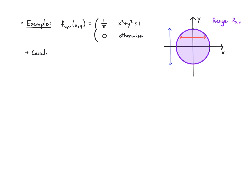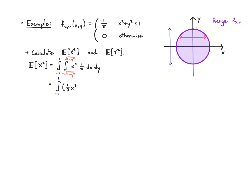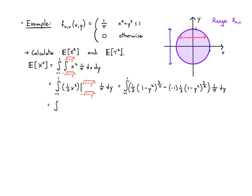Let's try E[x²] and E[y²]. Using the same integration limits but now with x², the inner integral gives a term involving (1−y²)^(3/2), and after integration E[x²] = 1/4. By symmetry of the circle, E[y²] = 1/4 as well. Now let's calculate E[x²y²] with the same setup but x²y² in the integrand. Using symbolic integration, the result is 1/24.